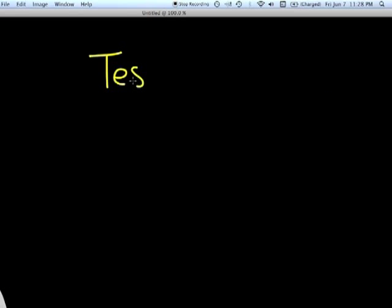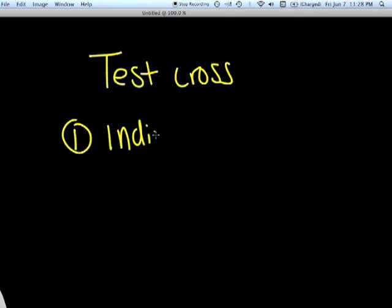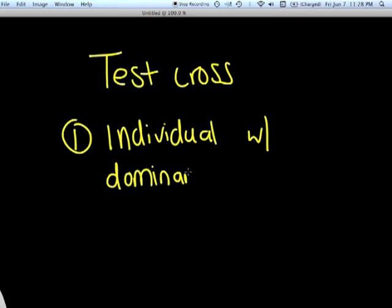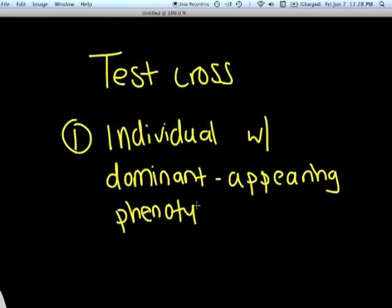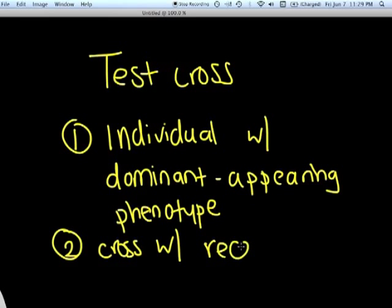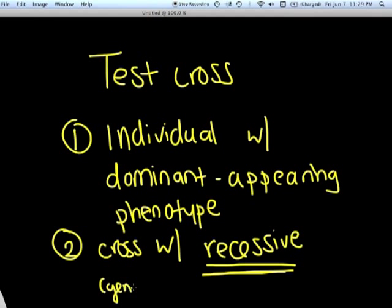So to summarize, in a test cross, you take an individual with a dominant appearing phenotype, and you cross that individual with another individual that has a recessive appearing phenotype. And because, in the case of recessive alleles, the phenotype is reflective of the fact that the genotype must also be recessive. So the genotype is also recessive.